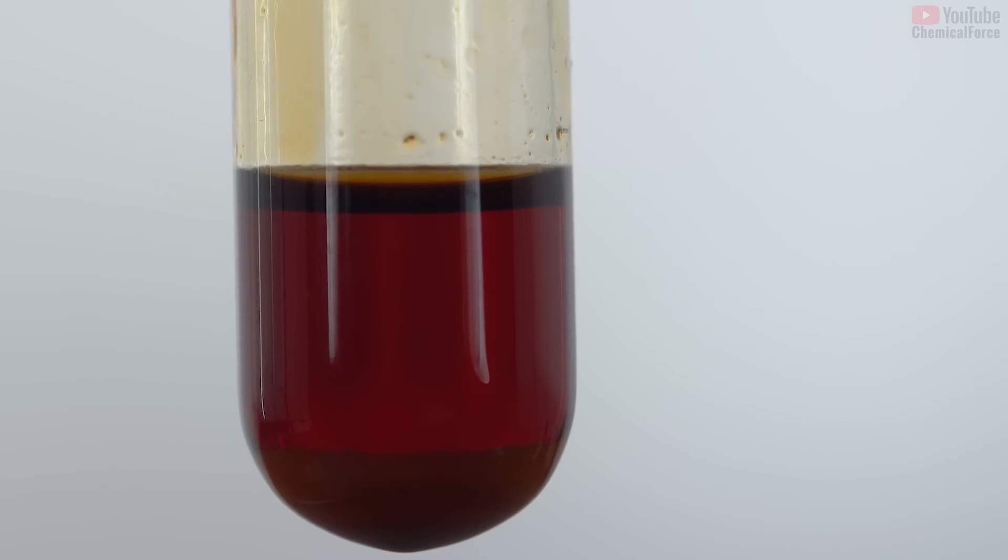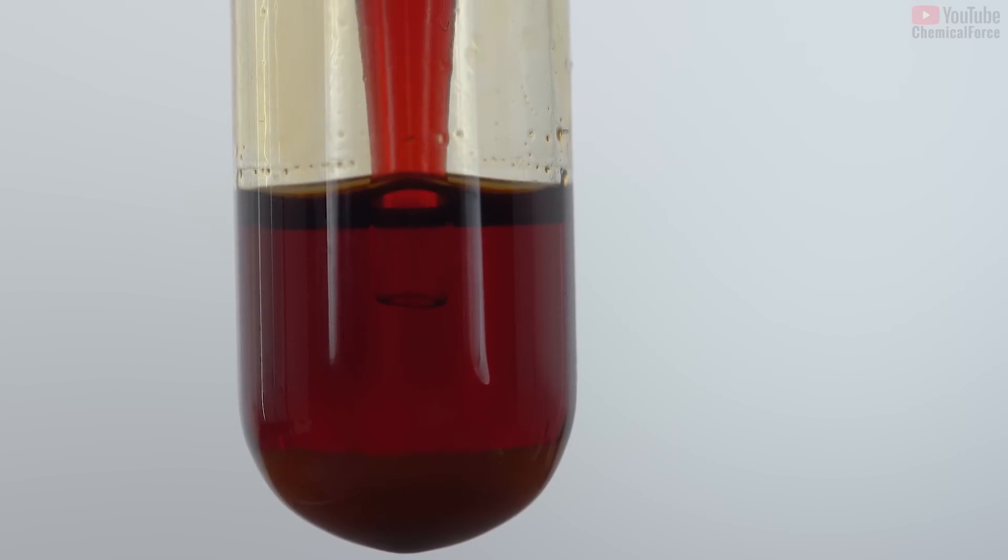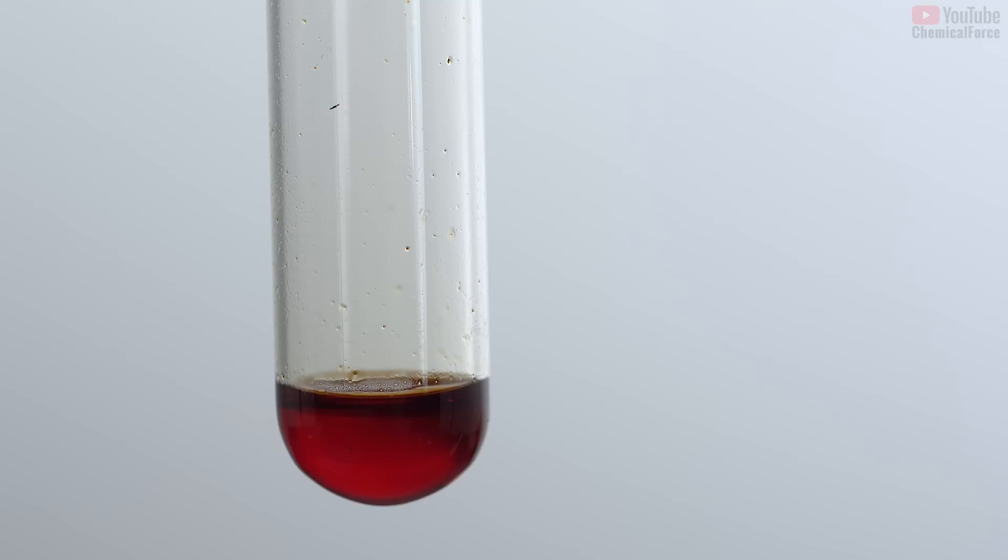Red phosphorus is insoluble in carbon disulfide. However, if we add red phosphorus to the phosphorus pentabromide dissolved in carbon disulfide, the solution will become colorless because phosphorus pentabromide turns into phosphorus tribromide, which represents a transparent liquid.